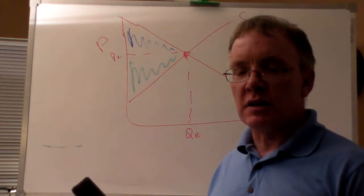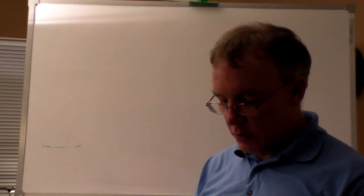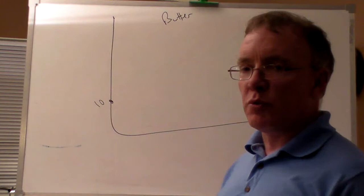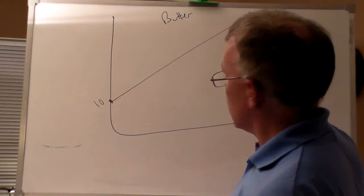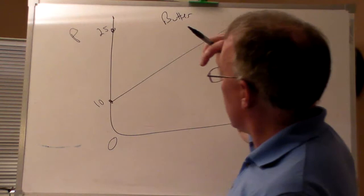An example I'm going to talk about is the market for butter, because price floors are often used in the agricultural sector. We'll imagine an economy where in the market for butter, if the price was at $10 a pound, no producers would produce. The supply curve would slope up, and if the price were $25 a pound, no consumers would want to buy — so at that price, quantity would be zero. We would have a demand curve sloping downward.